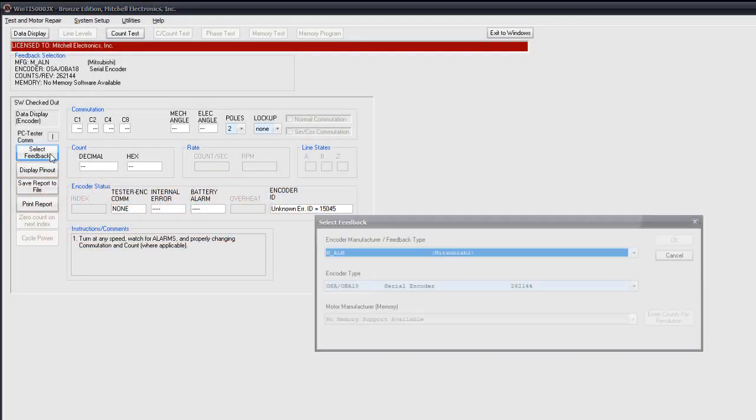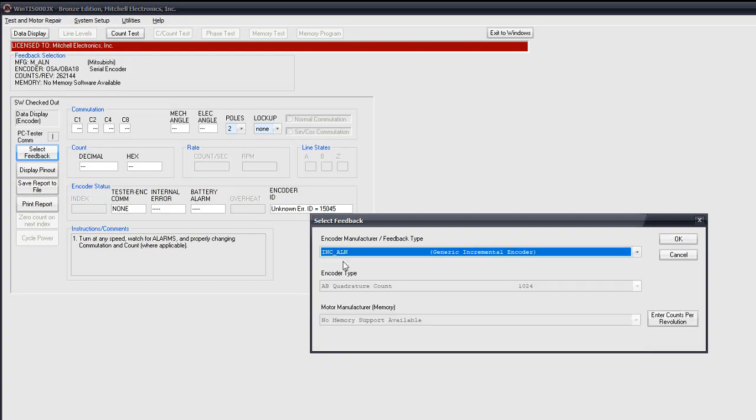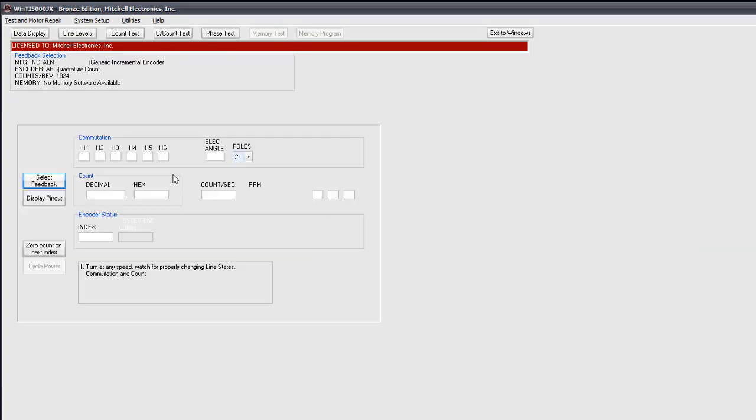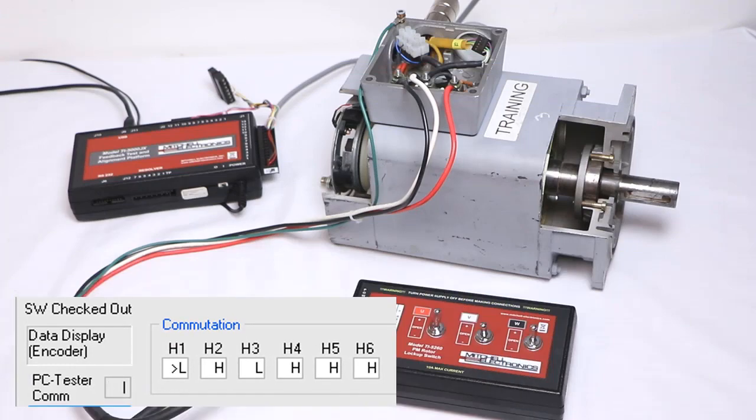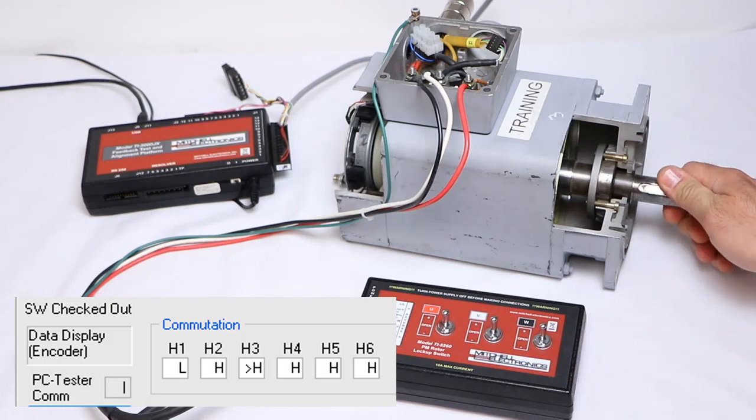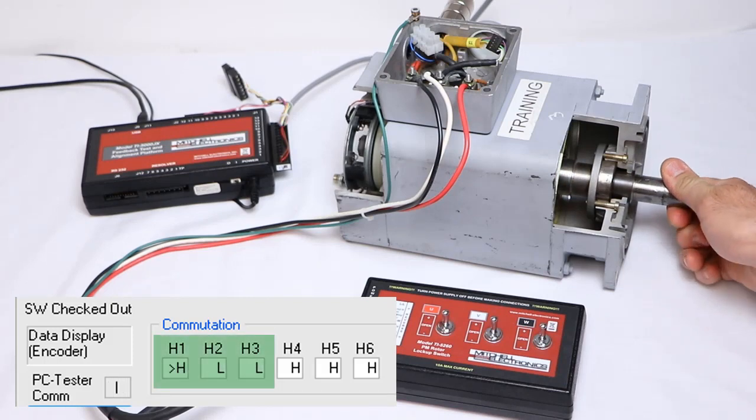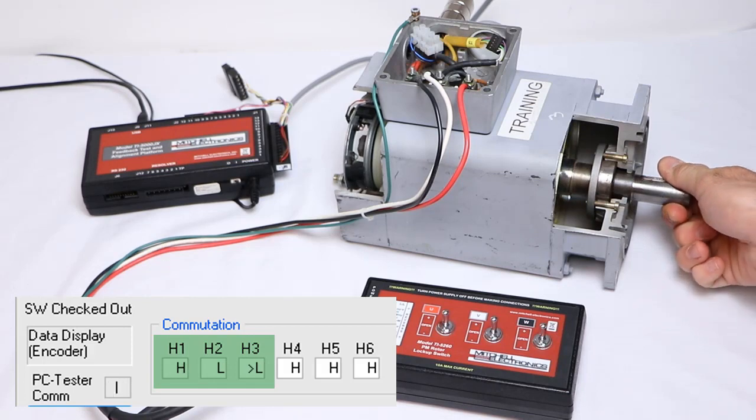These commutation states can be seen in the data display of generic incremental encoder selection. There are a minimum of three signals listed as H1, 2, and 3. To test they are working, simply turn the motor by hand and make sure that the first three signals are changing between high and low.